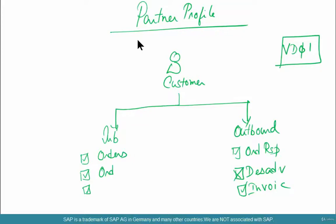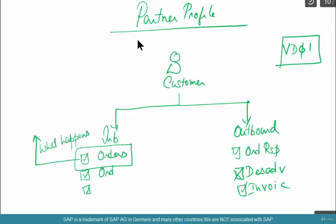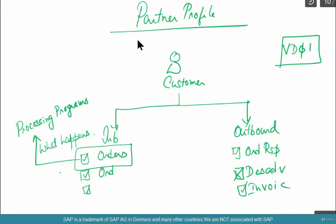What happens when an order comes in — you can customize that as well. What happens meaning: what's the processor, who has to process it? Walmart orders could be processed by a different processor, meaning a different program; Target orders could be processed by a different program. That level of control can be provided in the partner profile. Most of the time the processing program is going to be the same, but SAP gives you the flexibility to change it.